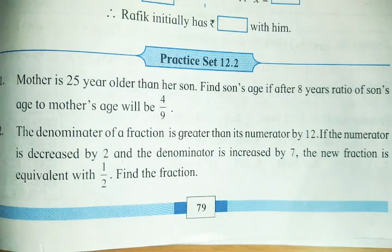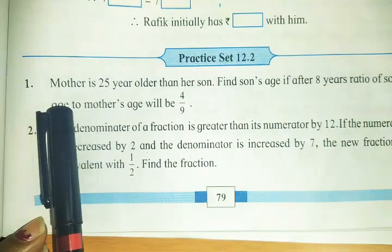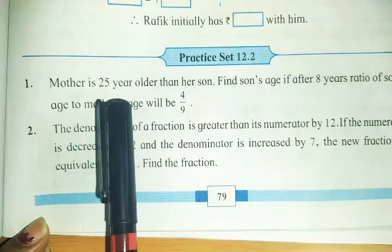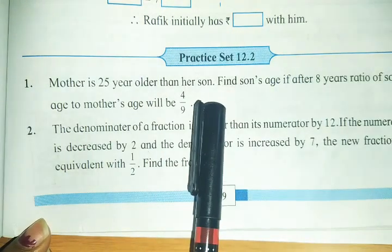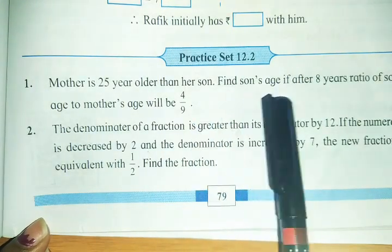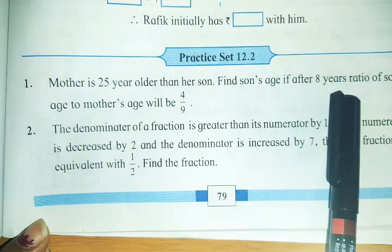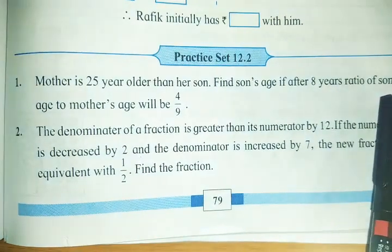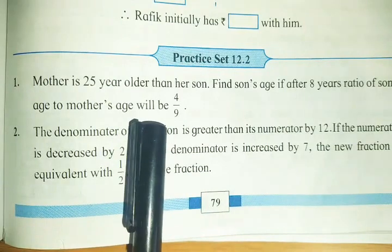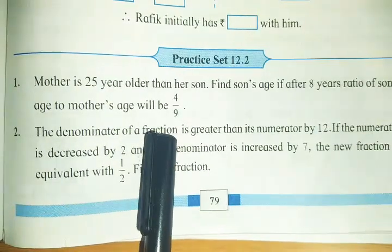Hello students, welcome. Practice Set 12.2, we'll look at the first question. Mother is 25 years older than her son. Find son's age if after 8 years, ratio of son's age to mother's age will be 4 upon 9.